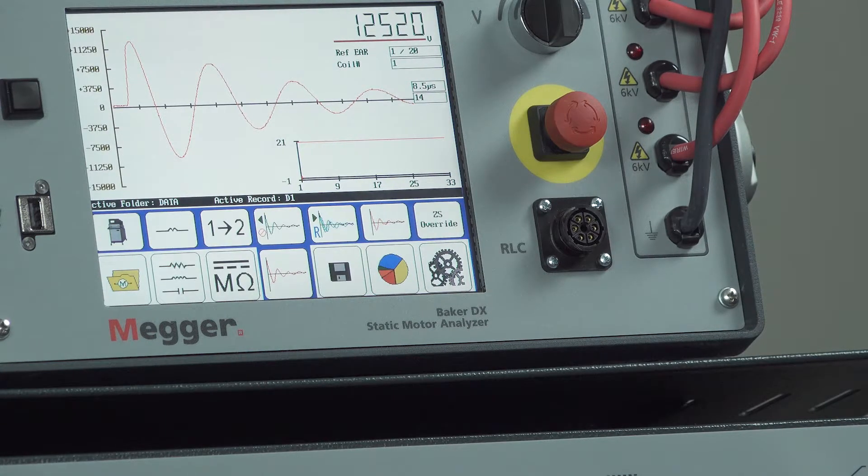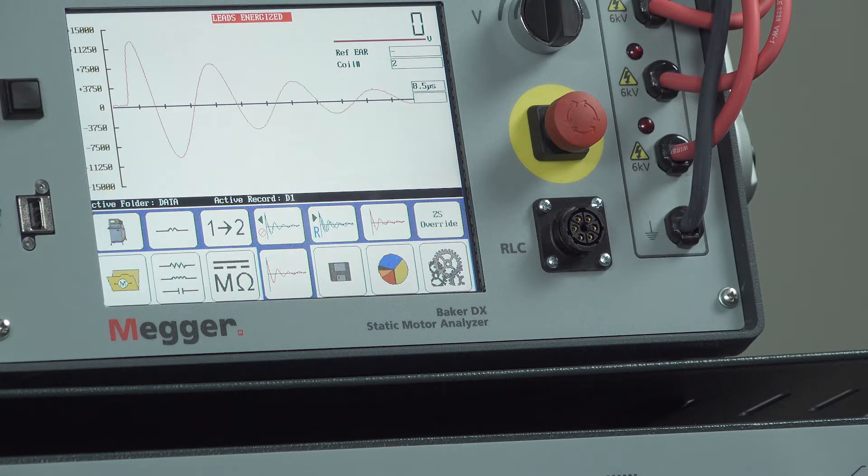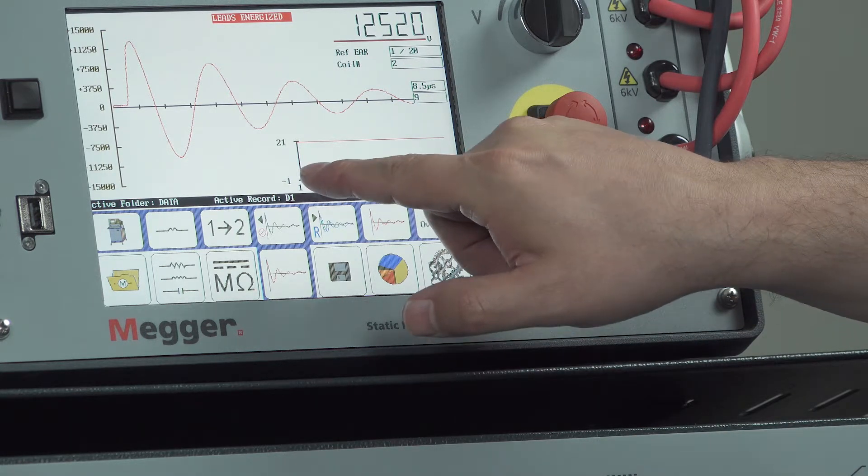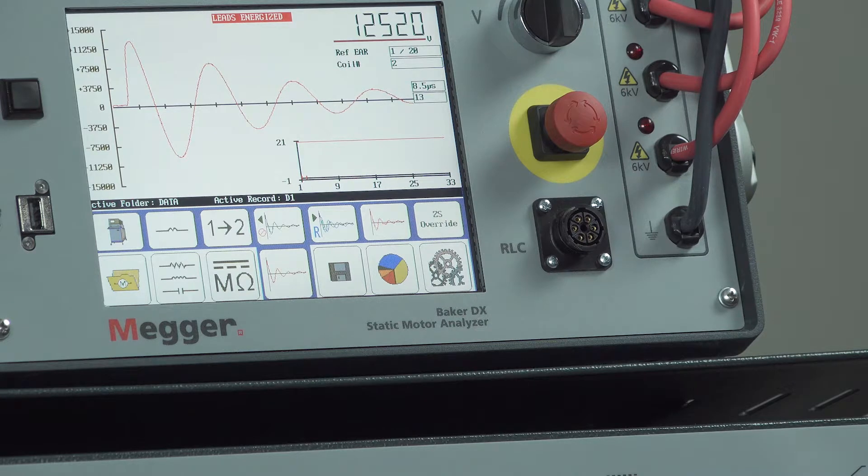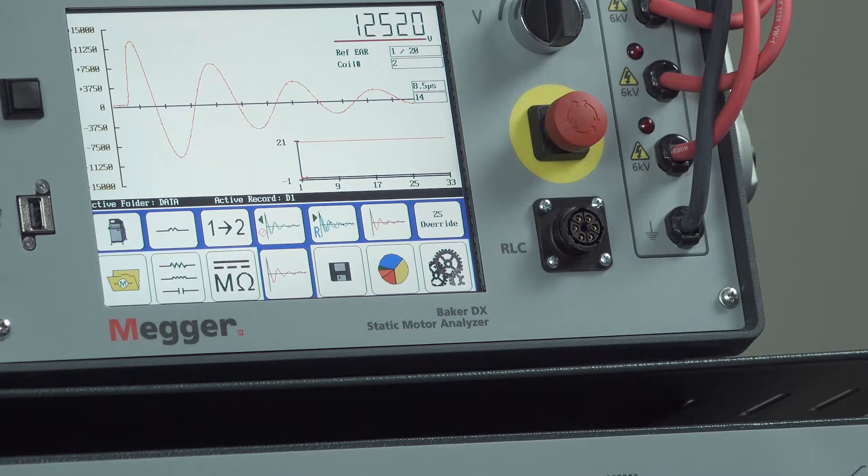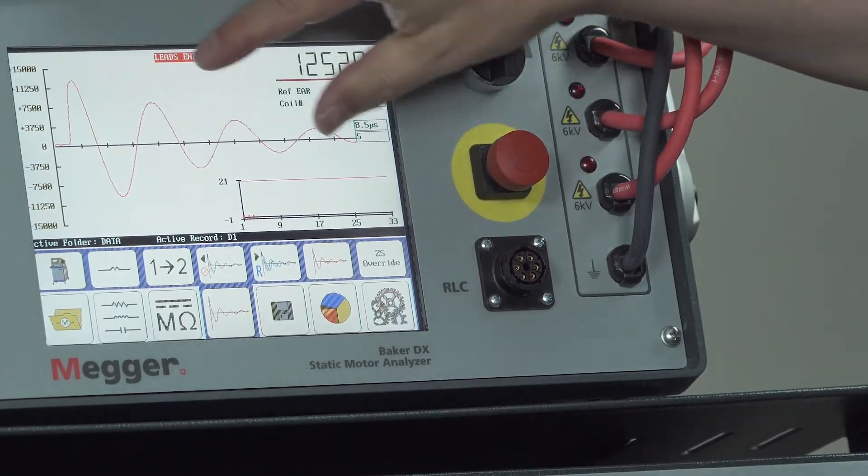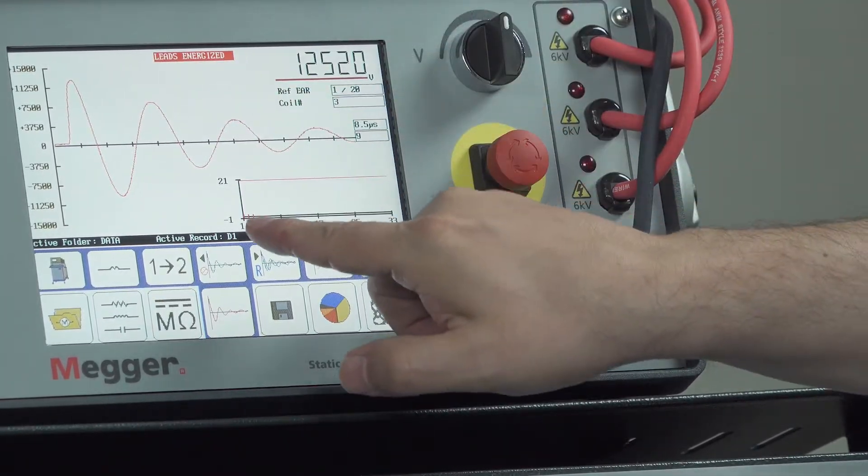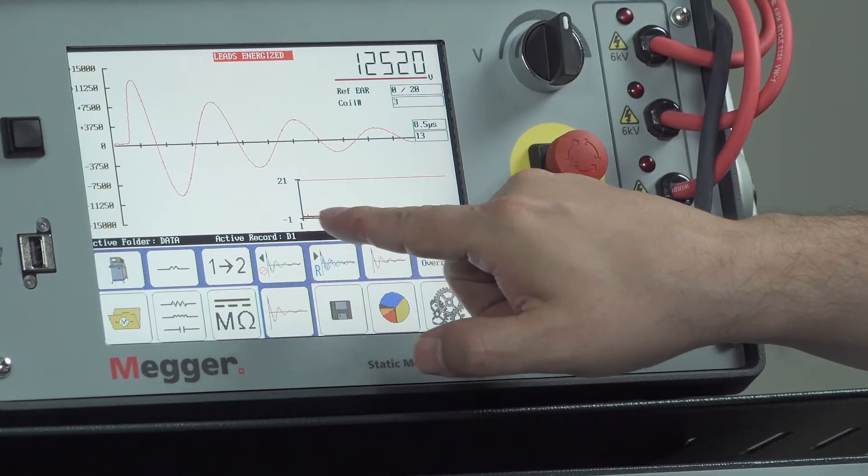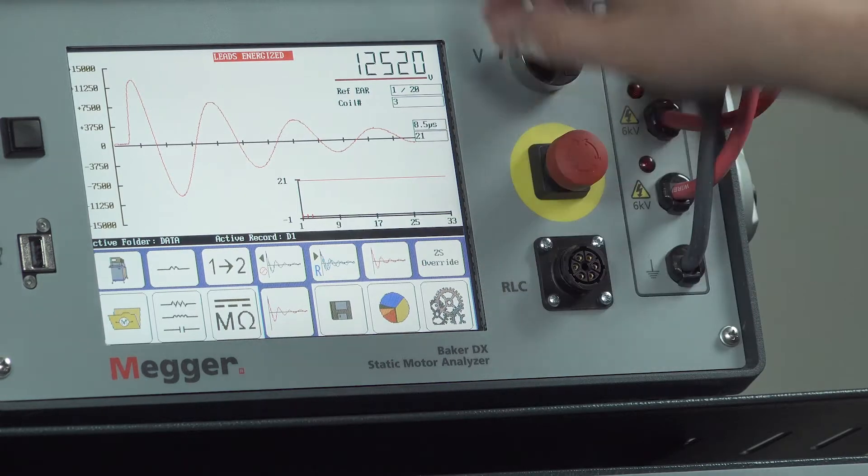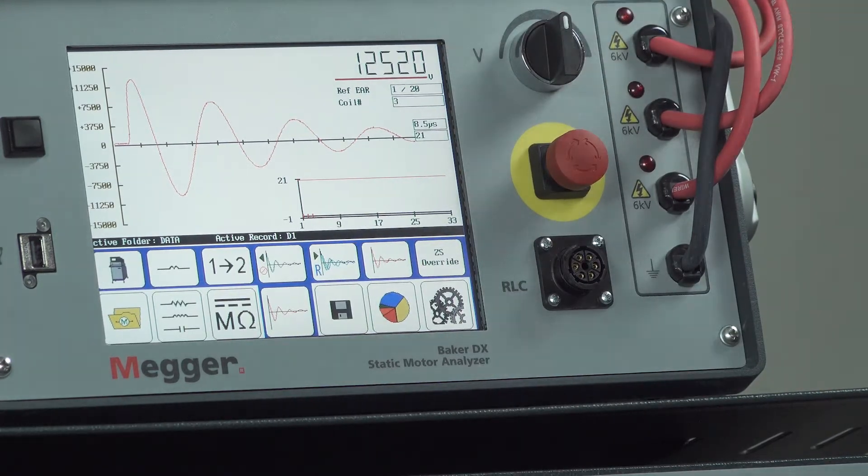Change the coil to the next coil. Press the test switch again. On the lower right hand corner here, we have a reference EAR graph that's being displayed. So each time I select a new coil and press the test switch, I'm surging that new coil, comparing the areas of the two waveforms, and then a small bar will be displayed there for the EAR percentage. In the upper right hand corner, we have the coil number, so it automatically increments.